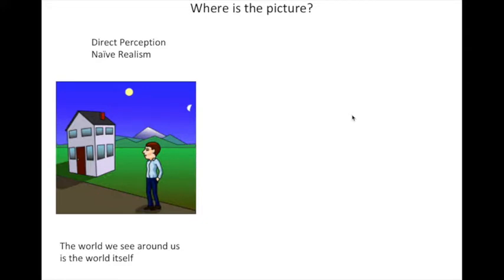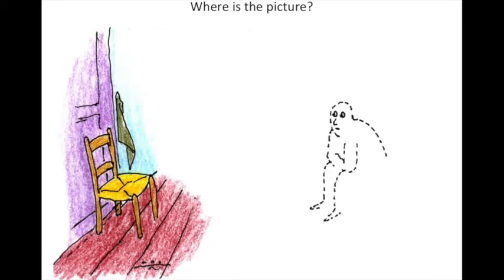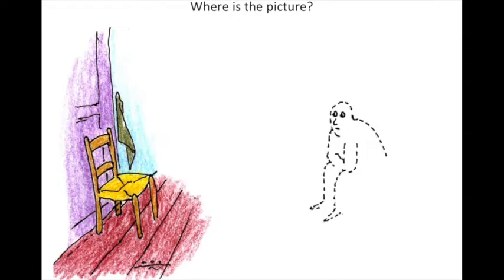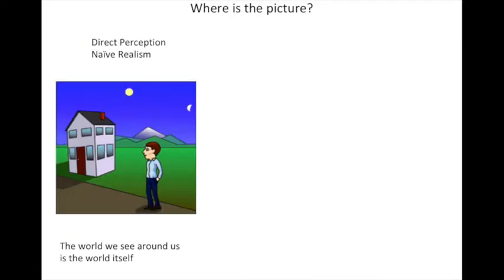This raises two possibilities. One is direct perception, also known as naive realism—the natural intuitive understanding that the world we see around us is the world itself. The problem with this view is that the world seems to go dark when we close our eyes, so the spatial structure that disappears is distinct from the world it represents, because the world continues to exist even when my eyes are closed. Another alternative is indirect perception, or representationalism, whereby the world we see around us is not the real world, but a perceptual replica in an internal representation—which would explain why it goes dark when we close our eyes.